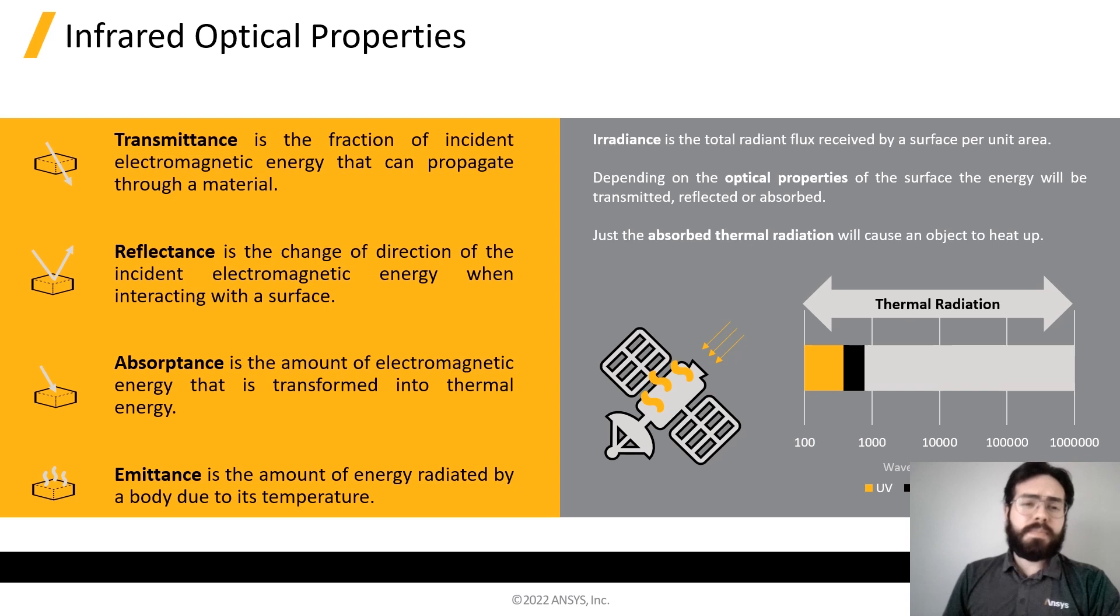Thank you, Noah. The way the energy will interact with our object of study will depend on the optical properties of the materials. We can differentiate four main kinds of behavior. First, we have Transmittance, which is the fraction of incident energy that propagates through an object. This property just applies to translucent materials.